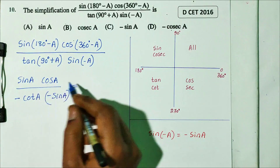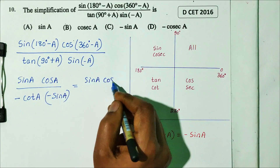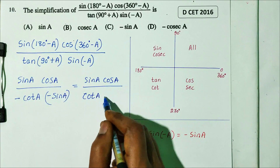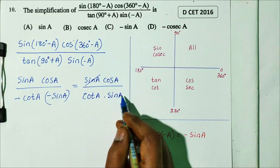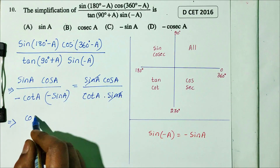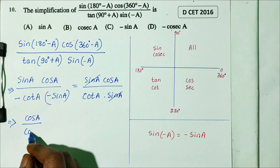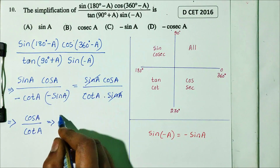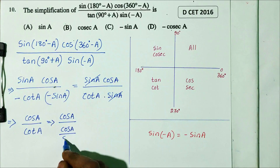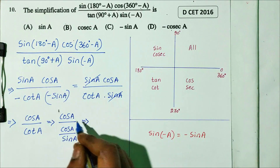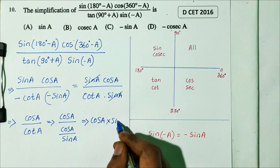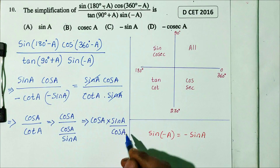So the numerator is sin A times cos A. The denominator is minus cot A times minus sin A. Cot A equals cos A divided by sin A, so the denominator becomes cos A divided by sin A times minus sin A, simplified to minus cos A. Wait, combining the two negatives gives positive cos A.